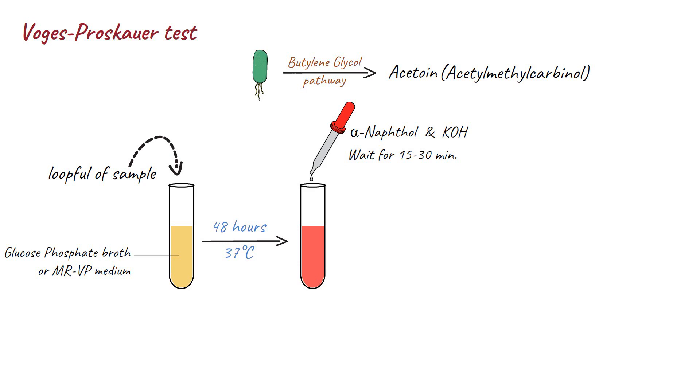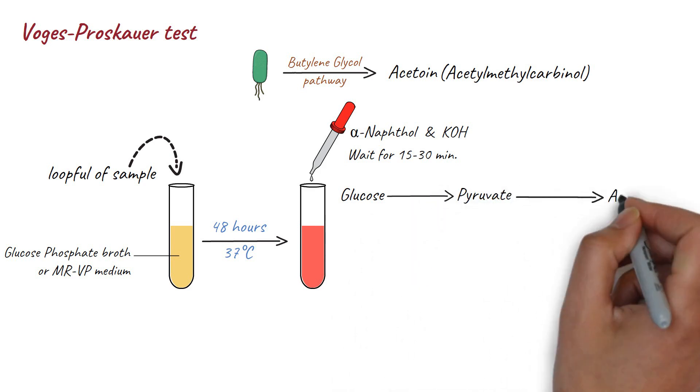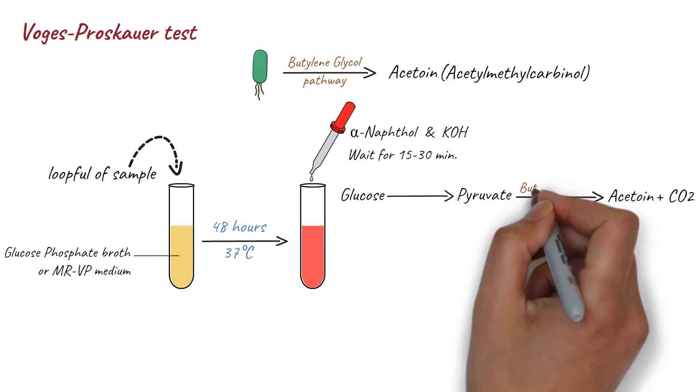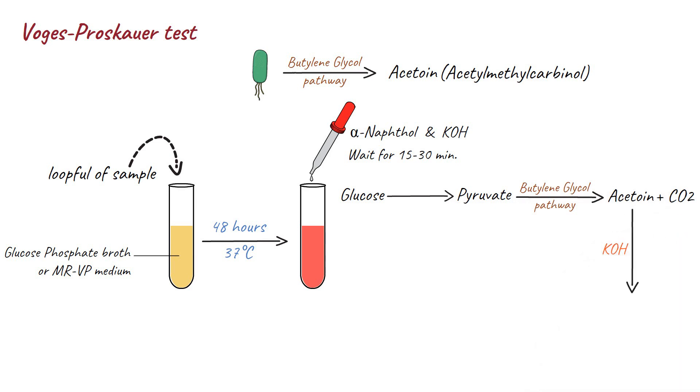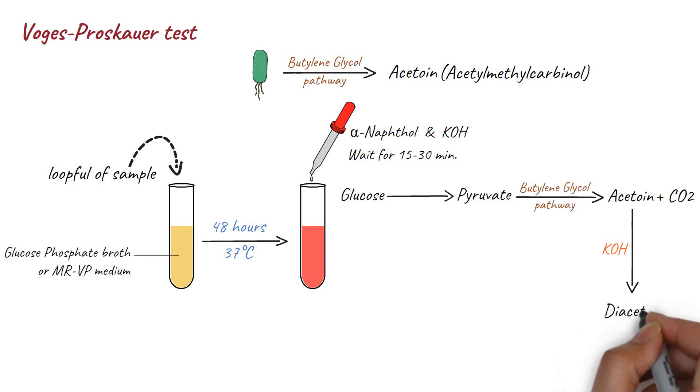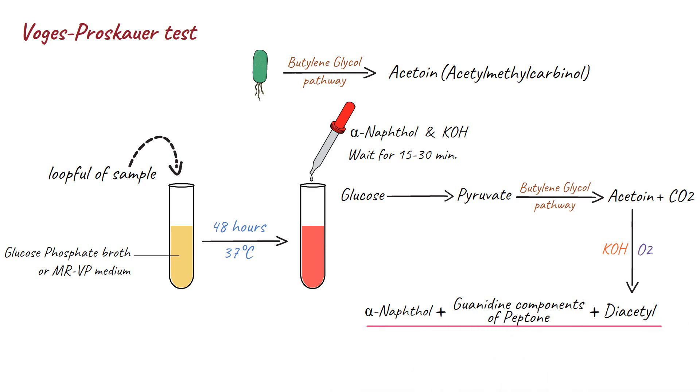Certain bacteria will ferment glucose to pyruvate and then produce acetoin and carbon dioxide through the butylene glycol pathway. If the bacteria is able to produce acetoin, it will react with potassium hydroxide to produce diacetyl in the presence of oxygen. The diacetyl then reacts with guanidine components of peptone in the presence of alpha-naphthol. This reaction will be indicated by the formation of a pinkish-red color.